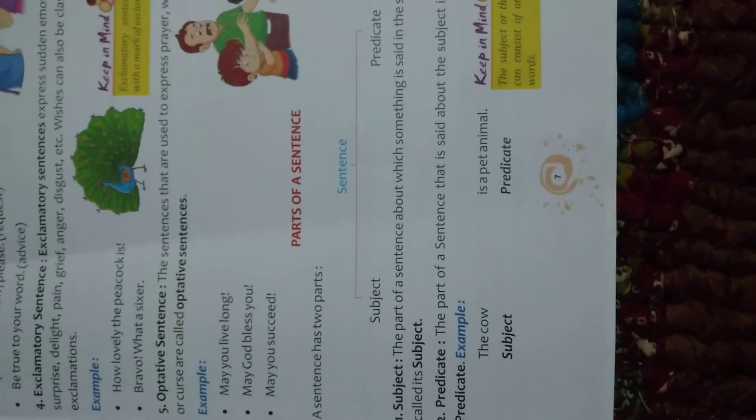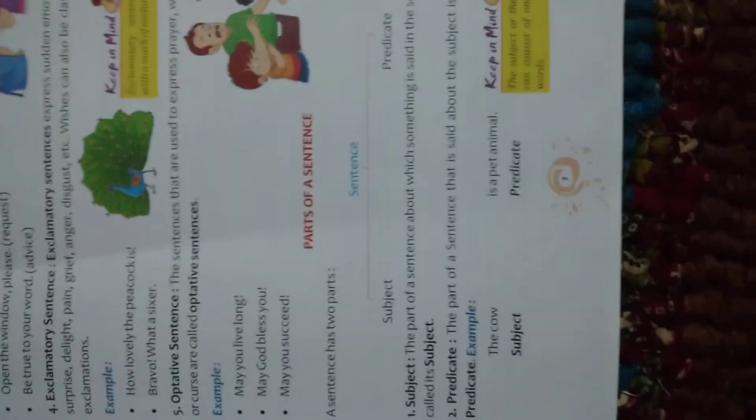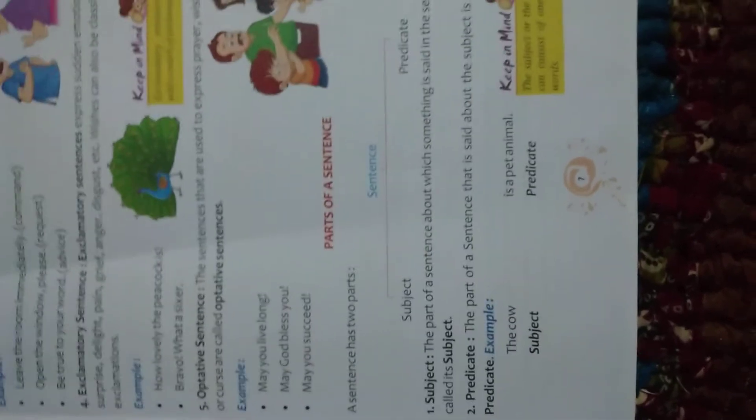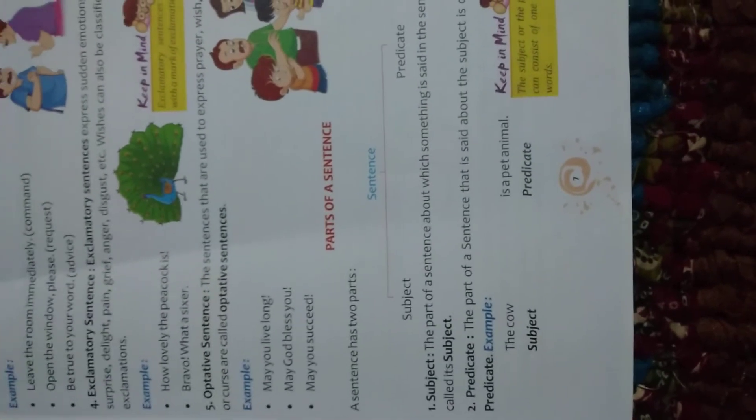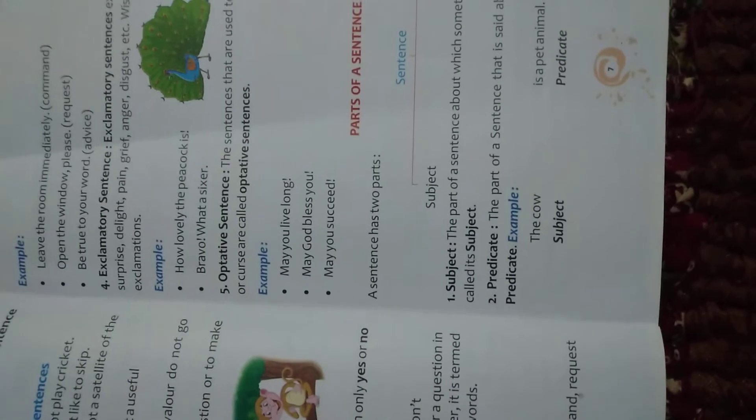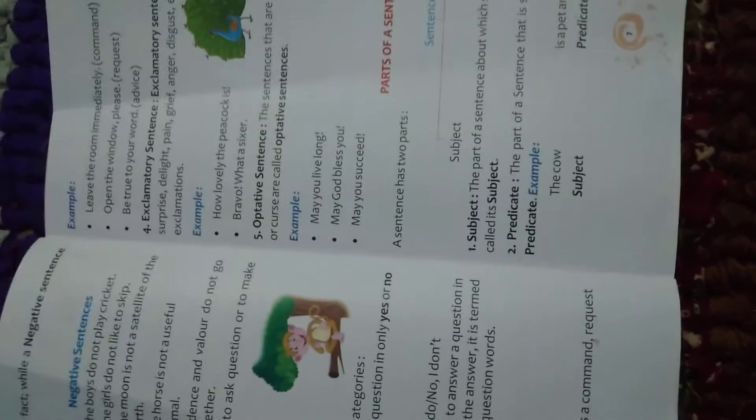A sentence has two parts: subject and predicate. The subject is what something is said about — it refers to somebody or something. The predicate is what is said about the subject. So in every sentence there will be a subject and a predicate, and these are the two parts of a sentence.